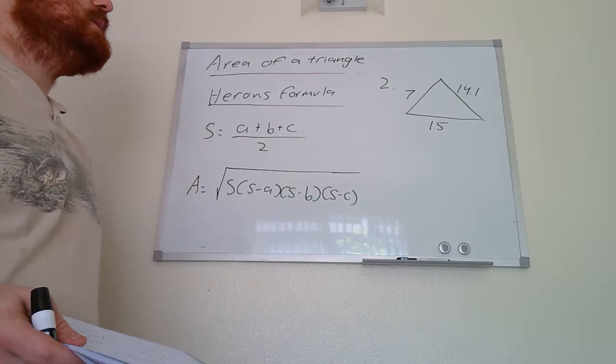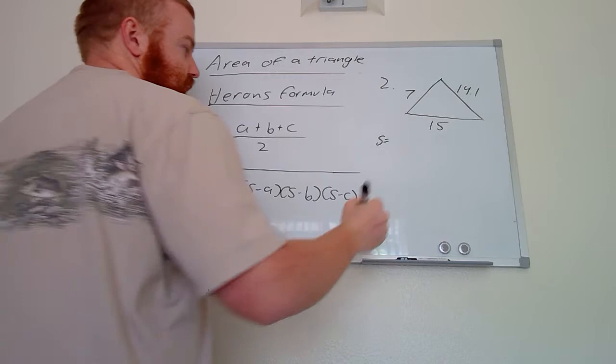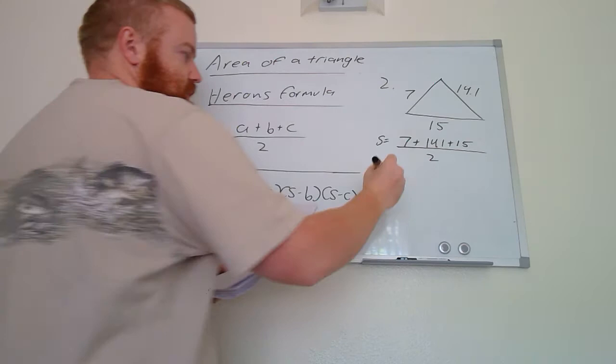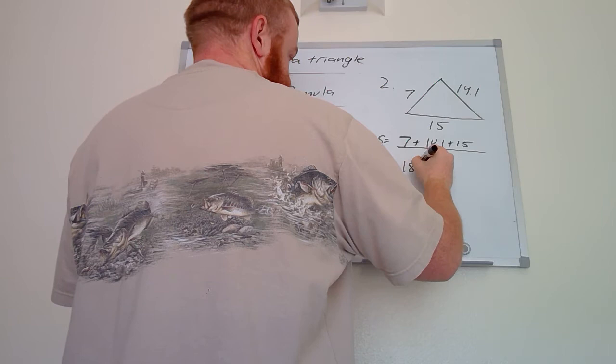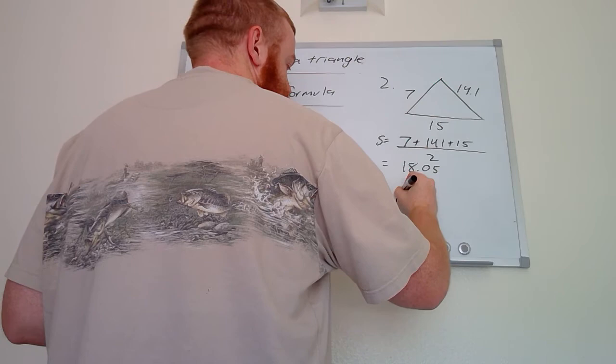We have a triangle where we have all three side lengths, so the first thing we need to do is calculate s. We take all three sides — 7, 14.1, and 15 — add them together, and divide by two. Plugging that into the calculator gives us s equals 18.05.